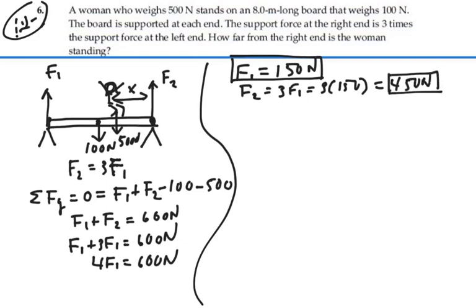Now we know a little bit more information about the problem. We want to find X. Let's choose, if we have a choice between A and B, let's choose B because we've defined X from B. It says how far from the right end is the woman standing. So let's choose B for our axis, in which case we eliminate force 2 from torque consideration because its line of action goes right through that point.